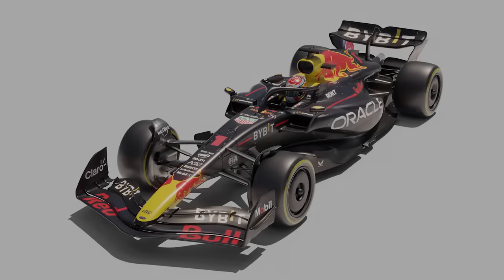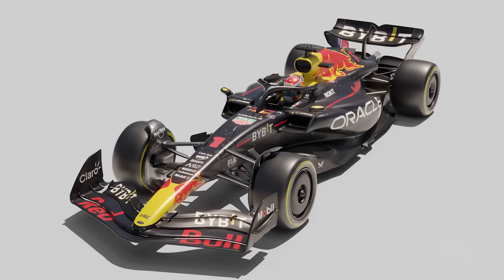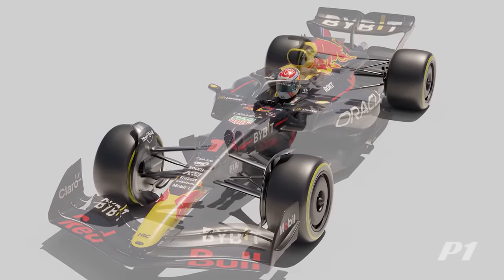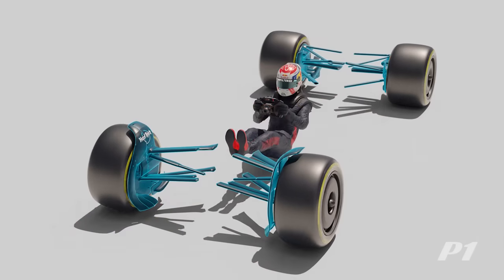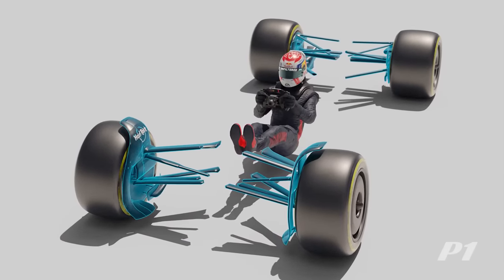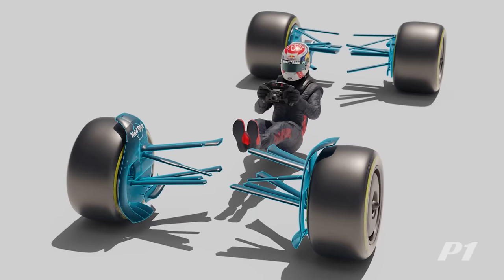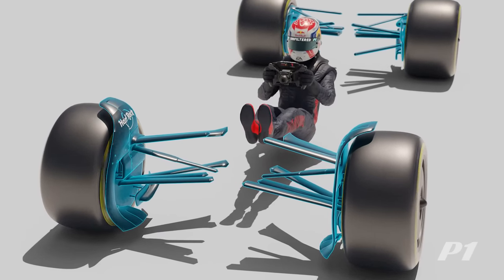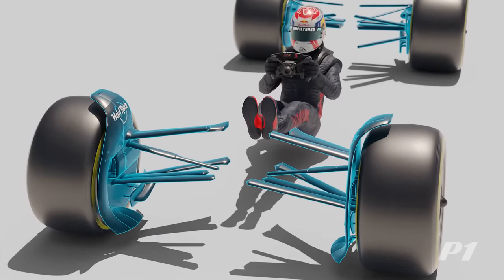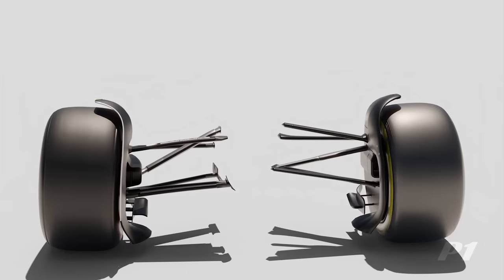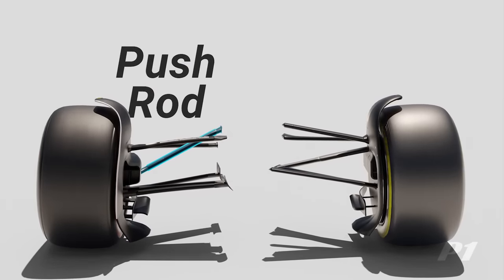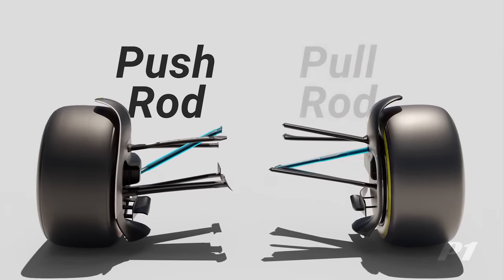The suspension is a vital part of an F1 car as it bridges the chassis and its four points of contact with the ground. In basic terms, the perfect suspension system means that a car can utilize as much grip as its tires can yield. In F1, there are two types of suspension systems, one consisting of the pushrod and the other the pullrod.